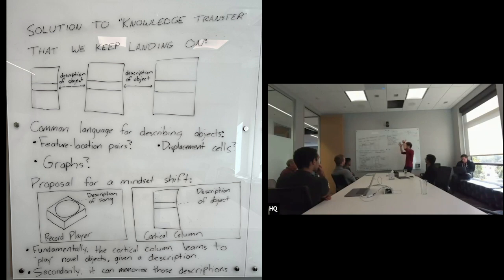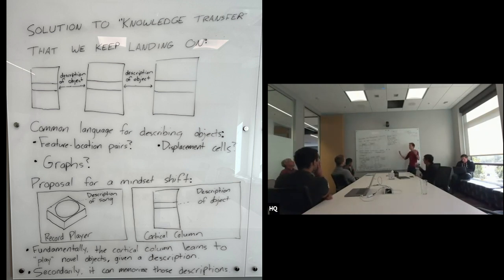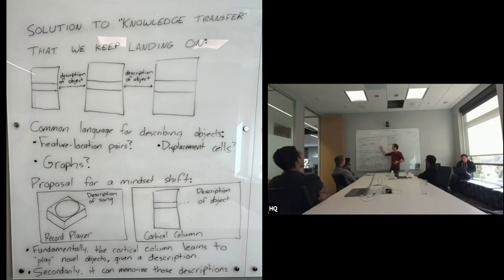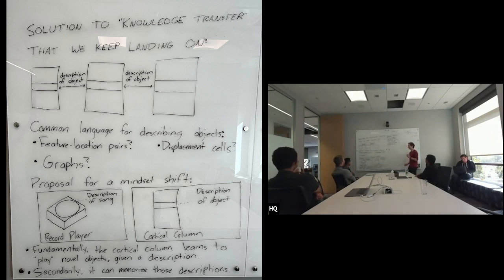So first of all, to define the term: knowledge transfer. Jeff used that term a few weeks ago for the first time to describe a problem in the thousand brains theory. You have this general set of scenarios where one cortical column wants to use information that was learned or picked up from another cortical column. You can frame this as: you learn over here and then you pass that knowledge over here, even though maybe this column never actually received a certain input. It still learns information that was originally obtained elsewhere.